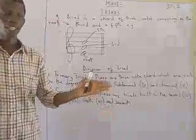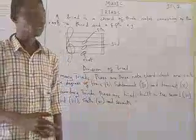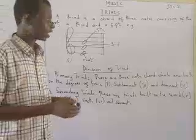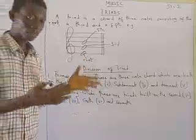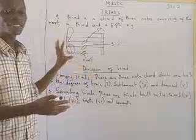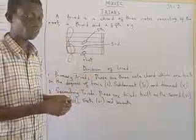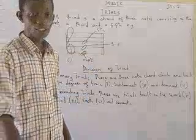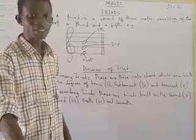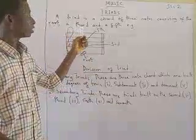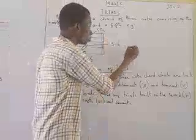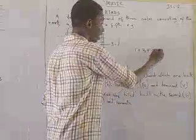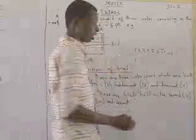Triads consist of a chord of three notes consisting of a root, a third, and a fifth. When you are talking about triads, I normally tell you that music has mathematics and physics in it. When you are constructing your triad, which is a chord of three notes that you play together, you strike the three notes together — that means you play the root, the third, and the fifth. The root plus the third plus the fifth gives you a triad.